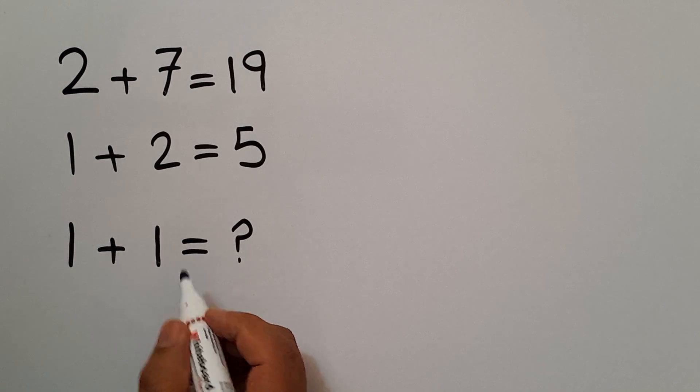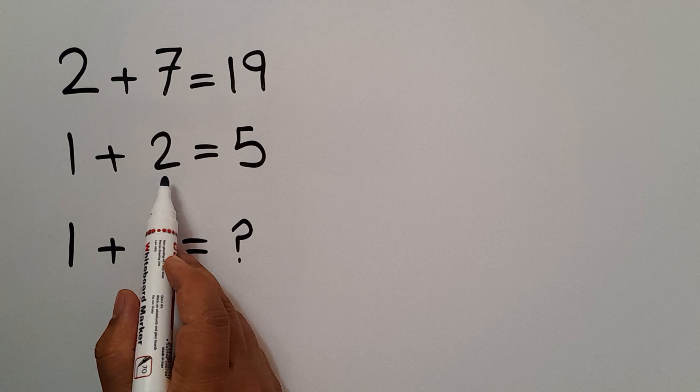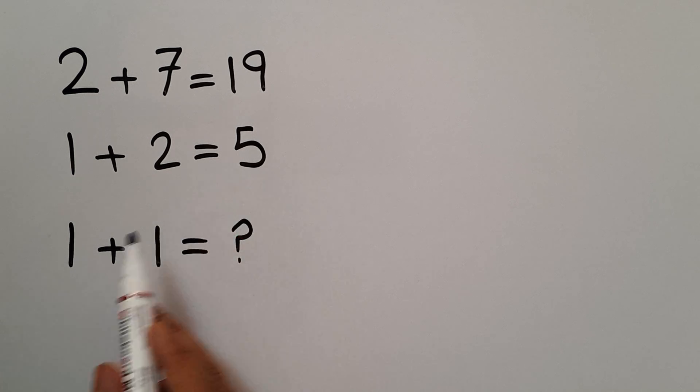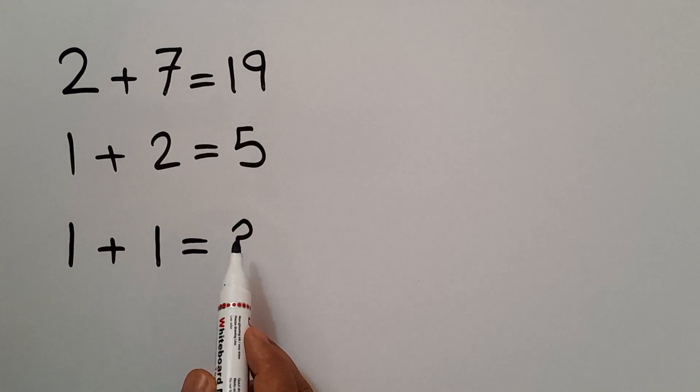Hey guys, welcome to Puzzle Joy. 2 plus 7 equals 19, 1 plus 2 equals 5, and 1 plus 1 equals question mark. Our goal is to find the pattern that exists here and calculate the missing number.